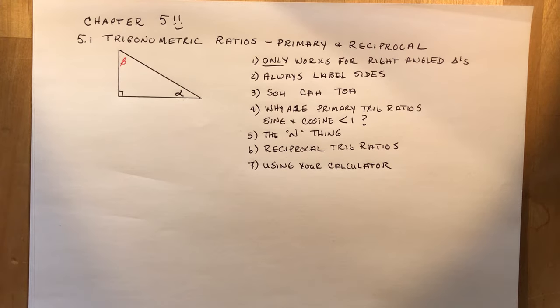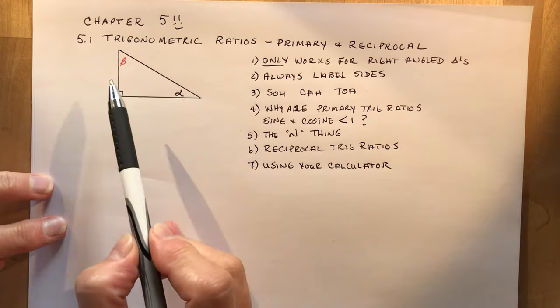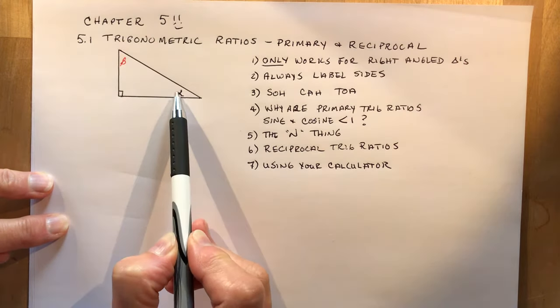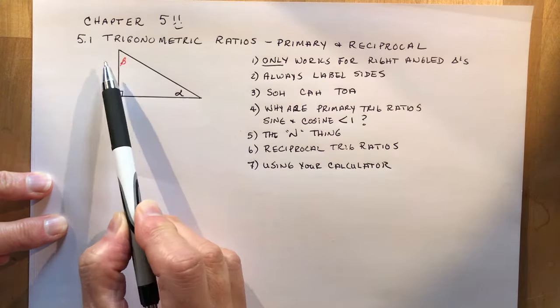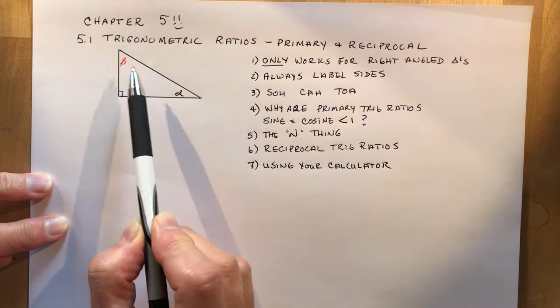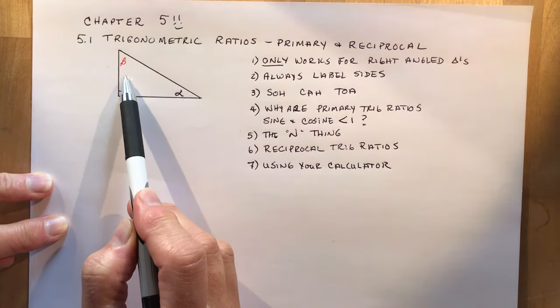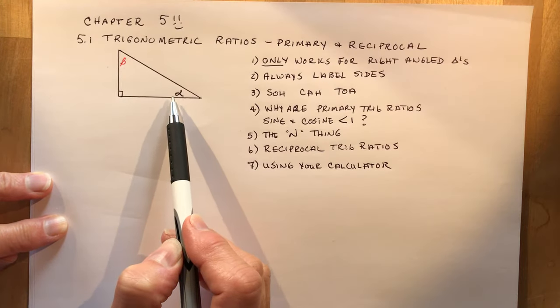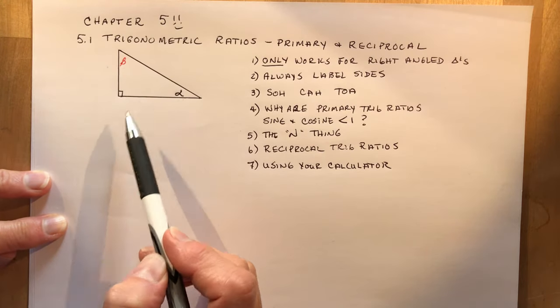First thing you need to know is how to label the sides, and trig ratios only work for right-angle triangles. A right-angle triangle has this little box here, 90 degrees. So we have two other angles that we have to deal with, and it's important that you understand that where you are in the triangle, what angle you're trying to solve for, makes a difference on how you label the sides.